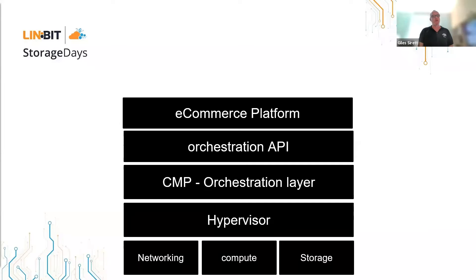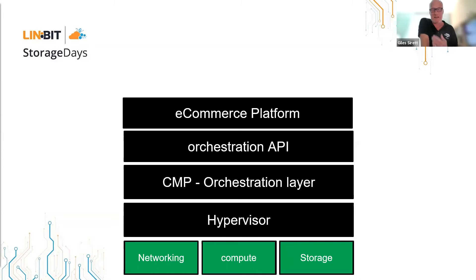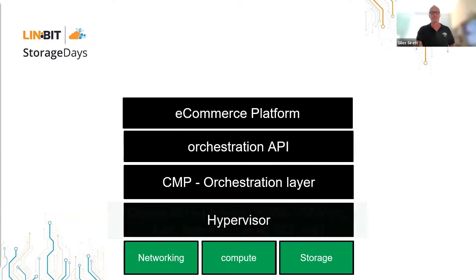Amazon then put what they call a CMP — a cloud management platform or an orchestration layer — on top of that. Back then, Amazon wrote their own thing. That exposed an API, which in terms of public cloud was then consumed by an e-commerce platform. Amazon already had an e-commerce platform because they were selling books and CDs. In terms of people being able to replicate that sort of functionality, this is the way CloudStack looks at it: we've got some networking, some storage, and some compute.